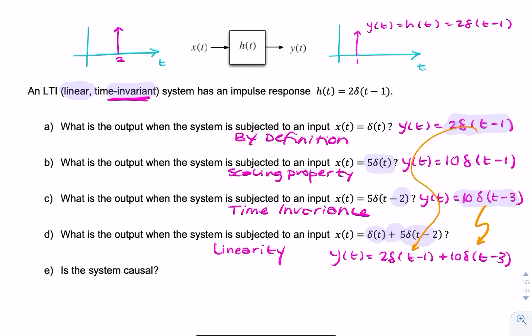And finally, we're asked, is this system causal? Now the condition for causality - a causal system condition would be that the impulse response is zero for all negative time.